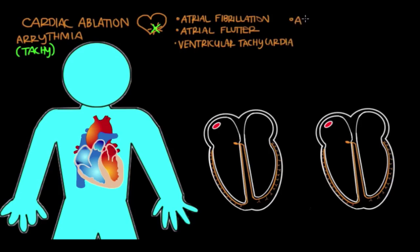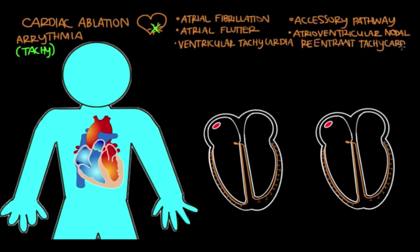Ablation treats tachycardias caused by accessory pathways. An accessory pathway is a connection between the top chamber of the atrium and the bottom chamber of the ventricle that shouldn't be there. The electrical signal escapes instead of going through the AV node, stimulating the ventricles too early. Ablation is also used to treat a condition called atrioventricular nodal re-entrant tachycardia, or AVNRT. AVNRT is a fast heart rate caused by an abnormal loop of electrical activity going around the AV node.